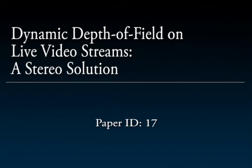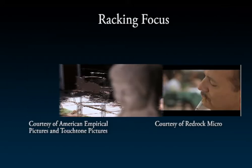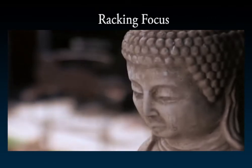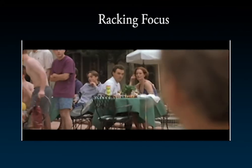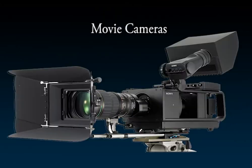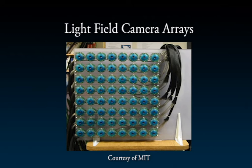Depth of field effects are a useful tool in photography and cinematography because of their aesthetic value. Capturing and displaying dynamic depth of field in live videos was until recently a quality unique to movie cameras. Movie cameras, however, tend to be bulky and unwieldy in order to accommodate complex lens arrays and storage media, and are usually very expensive. The recently proposed light field camera array can synthesize dynamic depth of field effects by using an array of images, but requires even more sophisticated setups.